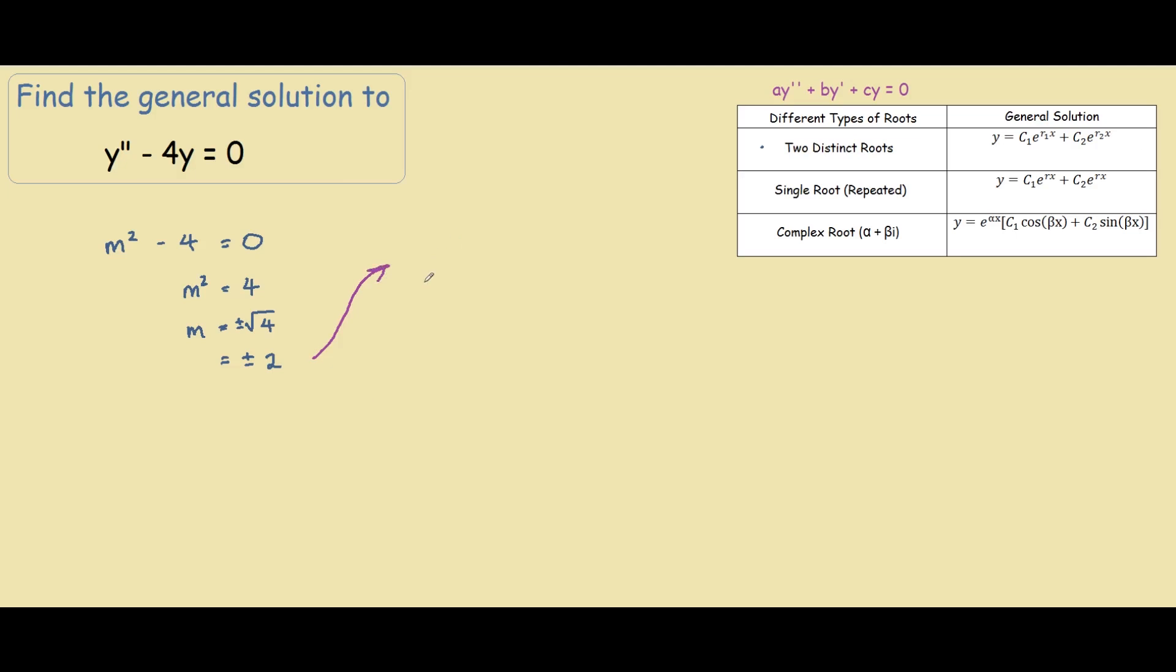So our general solution is y equals to some constant c1, e raised to the first root, so 2, x, plus second constant, e raised to the power of our second root, so negative 2x.